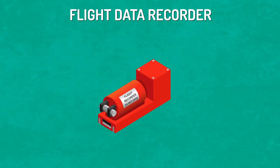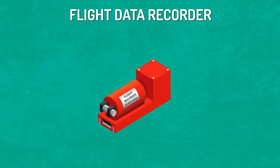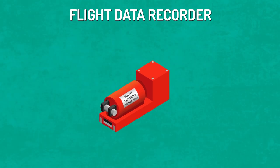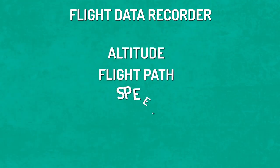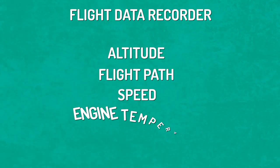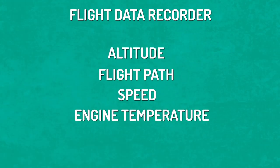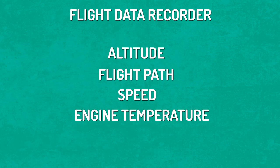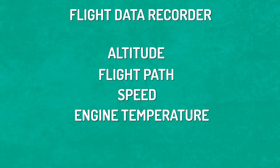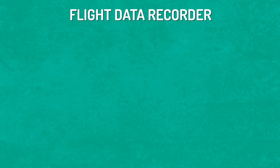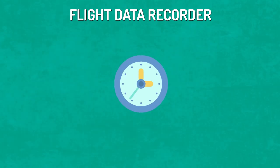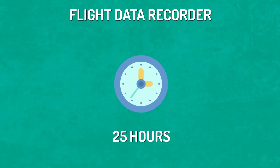Let's take a look at the FDR. The Flight Data Recorder is required by the FAA to record a minimum of 88 parameters, including altitude, flight path, speed, engine temperature, and so on. The most modern black boxes can record anywhere from hundreds to around 1,000 different parameters.